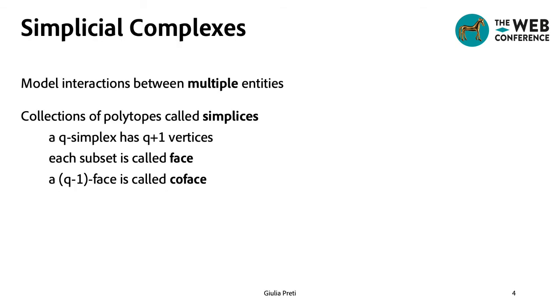A more expressive alternative to graphs are the simplicial complexes. Simplicial complexes can model relationships between multiple entities at a time. Each relation between Q plus 1 entities is called a Q simplex.